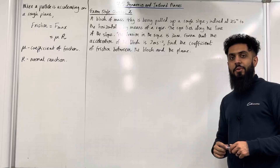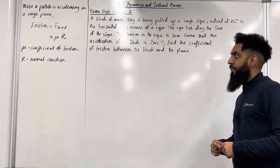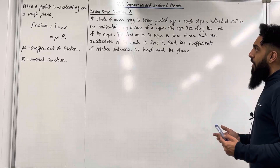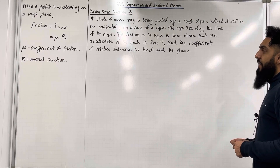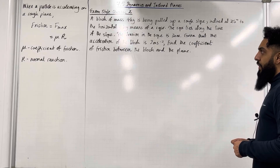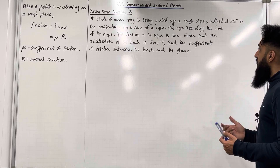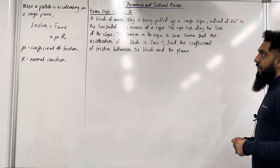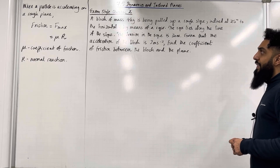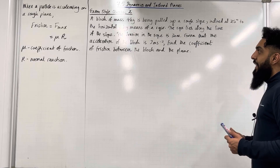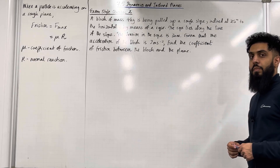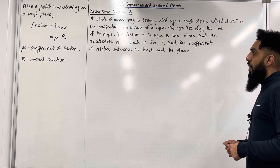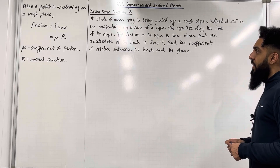Exam style question 2. A block of mass 4 kg is being pulled up a rough slope inclined at 25 degrees to the horizontal by means of a rope. The rope lies along the line of the slope. The tension in the rope is 30 newtons. Given that the acceleration of the block is 2 metres per second squared, find the coefficient of friction between the block and the plane.